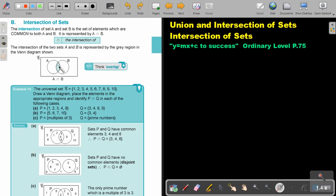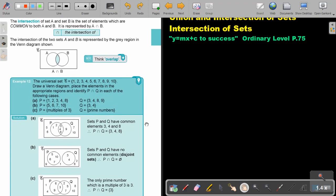So do you see? It's only that part, the overlap. Okay. Let's look at an example. The universal set E and that's the numbers up to 10, draw a Venn diagram, place the elements in the appropriate regions and identify P intersection Q in each of the following cases. So let's start by looking at the first one.